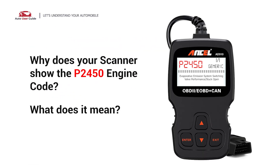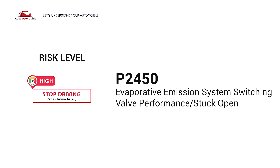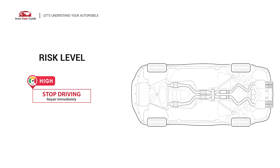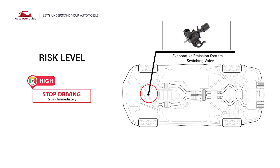Why does your scanner show the P2450 engine code? What does it mean? P2450 is a diagnostic trouble code for evaporative emission systems, indicating a switching valve performance issue or stuck open condition. It means the PCM detects that the evaporative emission system switching valve has not moved from the open position when commanded to close.